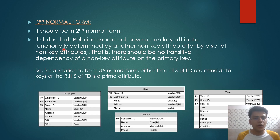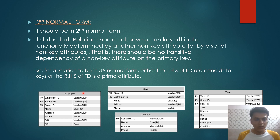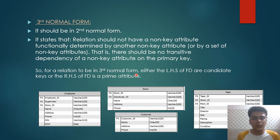Third normal form states it should be in second normal form — which we checked — and also that a relation should not have a non-key attribute functionally determined by another non-key attribute. In our relations it is clear that no non-key attribute is dependent on another non-key attribute, so our relations are in third normal form. For a relation to be in third normal form, either the left-hand side of the functional dependency is a candidate key, or the right-hand side is a prime attribute.